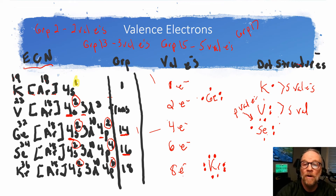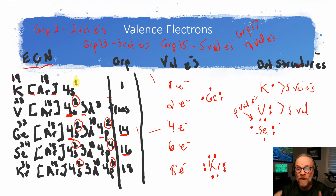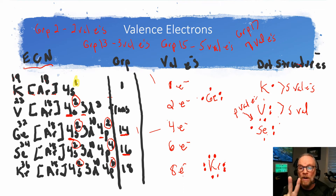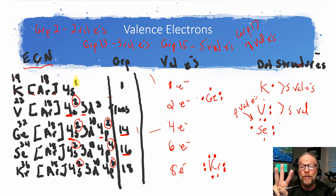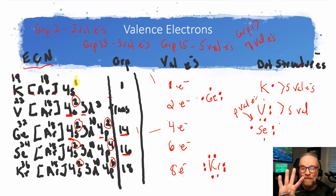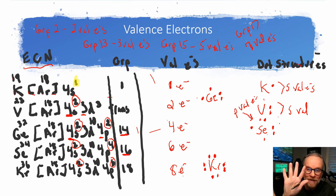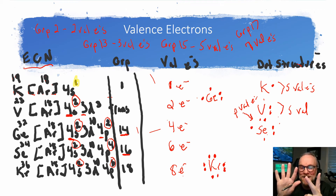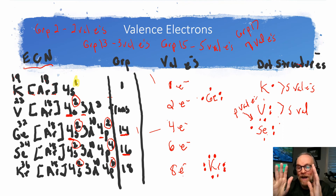To review: group 1 elements have one valence electron, group 2 have two, group 13 have three, group 14 have four, group 15 have five, group 16 have six, group 17 have seven, group 18 have eight. The transition metals in the middle all have two, with a few exceptions we'll discuss later.